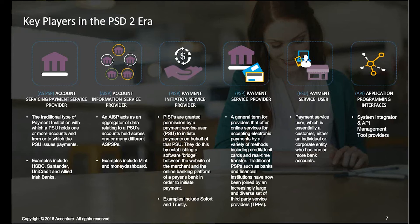Then there are Payment Service Providers — a broader category covering all of those first three categories. There is also the Payment Service User, which has two parts: the individual user of an AISP or PISP account who wants to initiate a transaction, and the merchant who is the recipient of these transactions. And then there are APIs — the digital glue connecting all of these together.